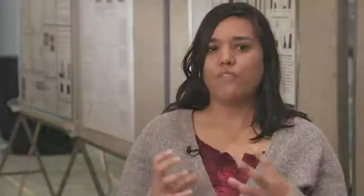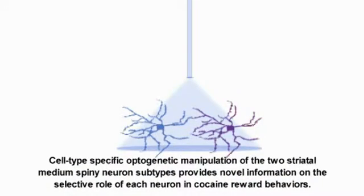These medium spiny neurons are located in the striatum — both the dorsal striatum and ventral striatum — and I'm really focused on the ventral striatum, which is also known as the nucleus accumbens, because it plays a big role in addiction behaviors. It's these maladaptive responses and drug addiction. We see a lot of neurobiological changes in this region. However, there are multiple cell types in that region that are intermixed and you can't really distinguish these different cell types.